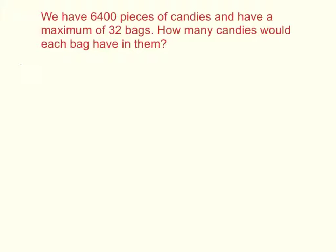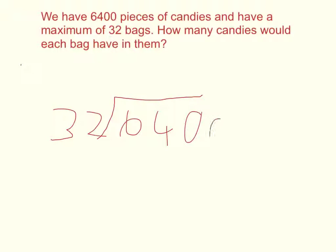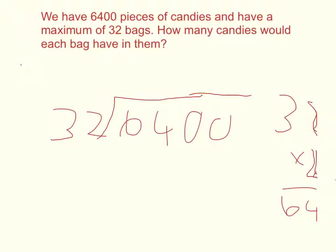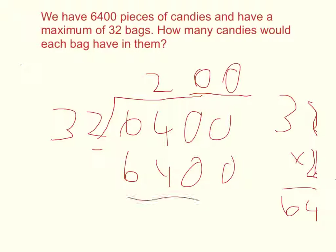Now we're going to solve the problem. We need to find first numbers that 32 can make. One number is 64, because we can make that with 32 times 2. So if we need to find 32 divided into 6,400, we just have to add two zeros to 2, making it 200. 32 times 200 equals 6,400, leaving a remainder of zero.